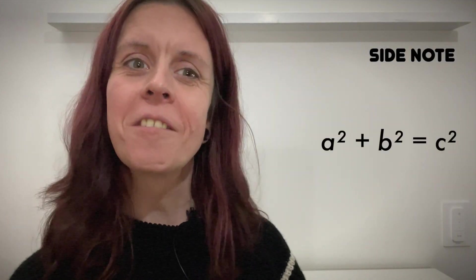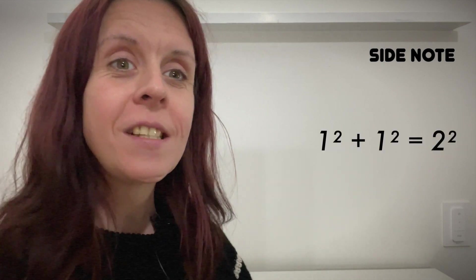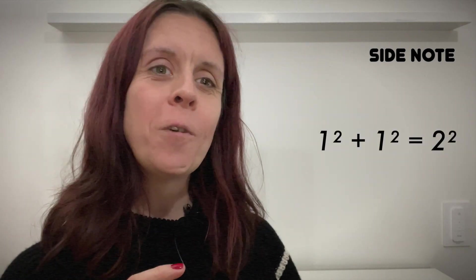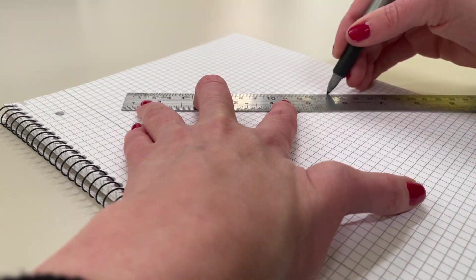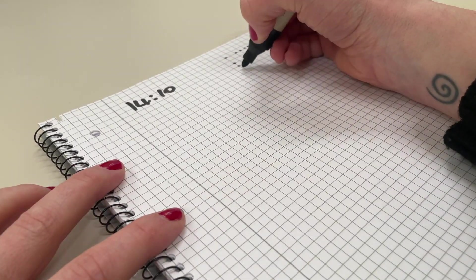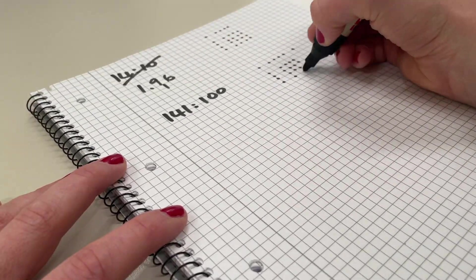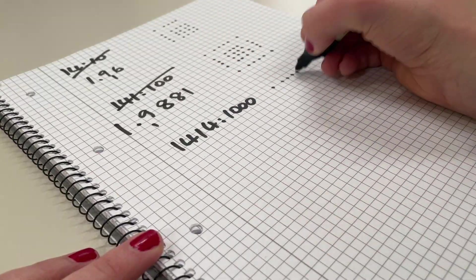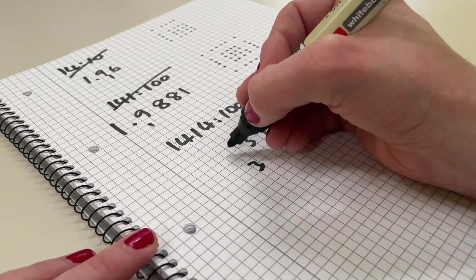Side note: one day somebody had the nerve to try Pythagoras' famous triangle equation on sides with length one. It followed that the hypotenuse must be the square root of two. And try as they might, they couldn't find two whole numbers with a ratio equal to the square root of two. Eventually, somebody managed to prove that there was no such ratio — it is what we now call irrational. But instead of accepting this new fact, they hushed it up and they killed the person who found it. That's how much they loved ratios.